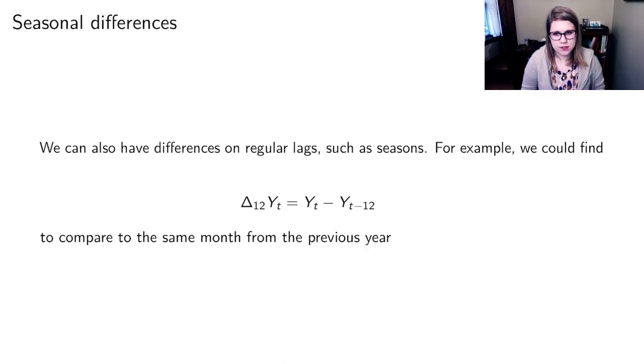One more thought about differences. We can have differences on any type of lag. So we could have a seasonal difference, a delta 12, to compare today's data versus a year ago. So to compare to the same day or month from the previous year.